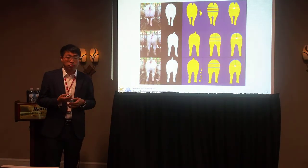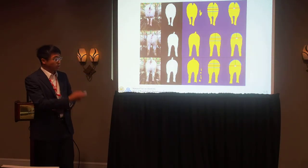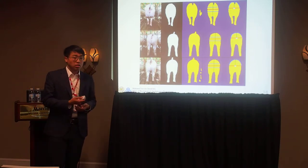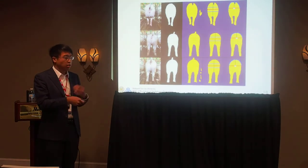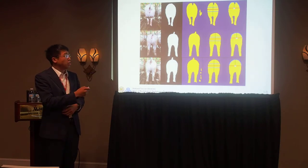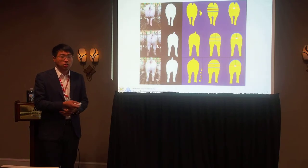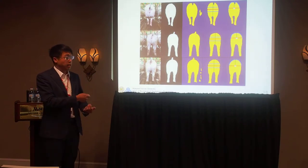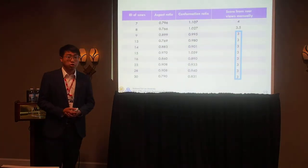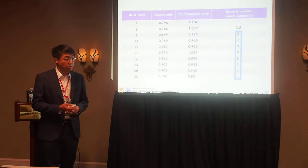These are some results of the image processing and semantic segmentation. The first row is the original image, the second row is the training mask, and the third column is the output mask. The fourth and fifth columns show the aspect ratio and conformation ratio results. After these steps, I can get the ratios to train the linear regression to determine the body condition score.